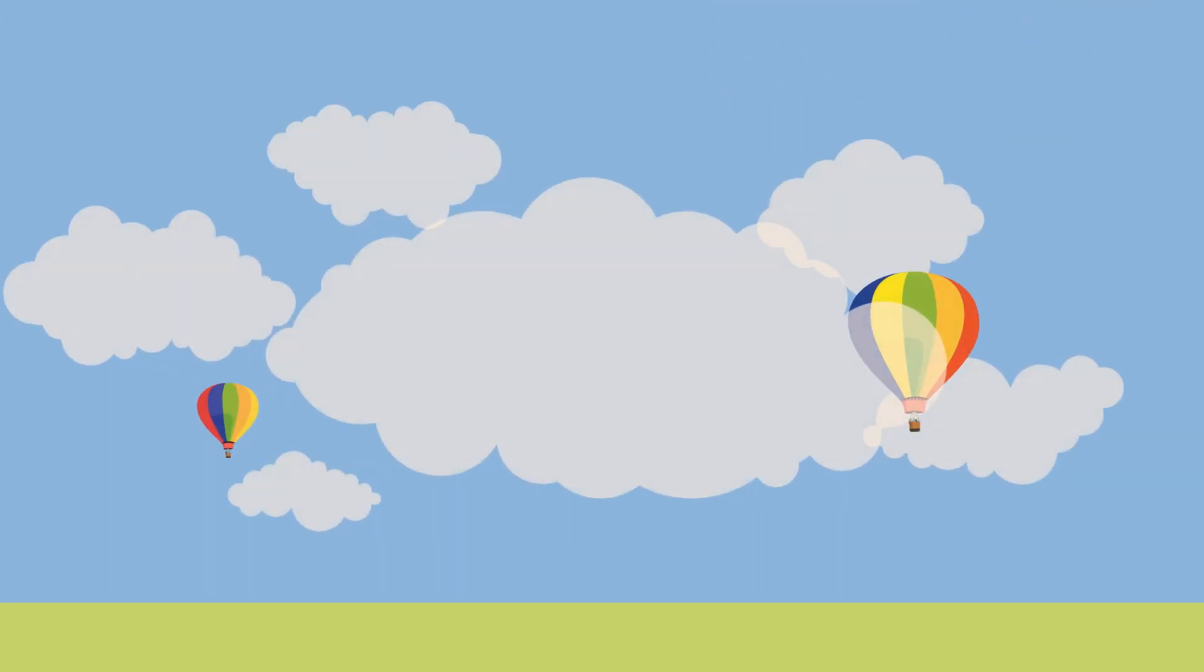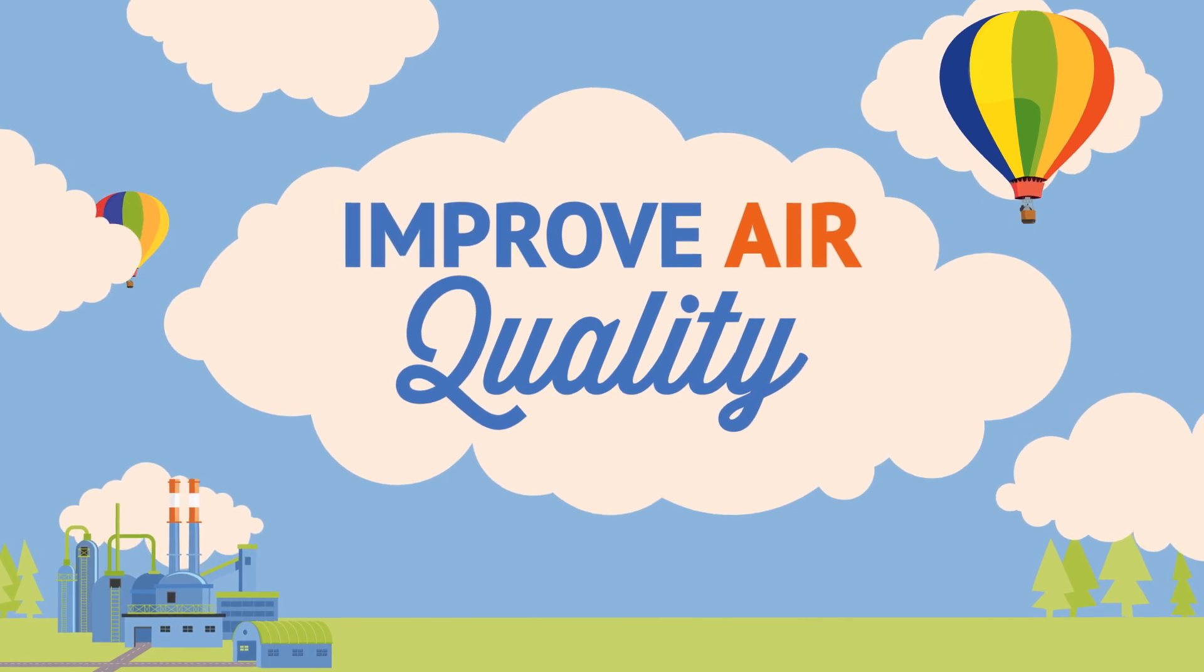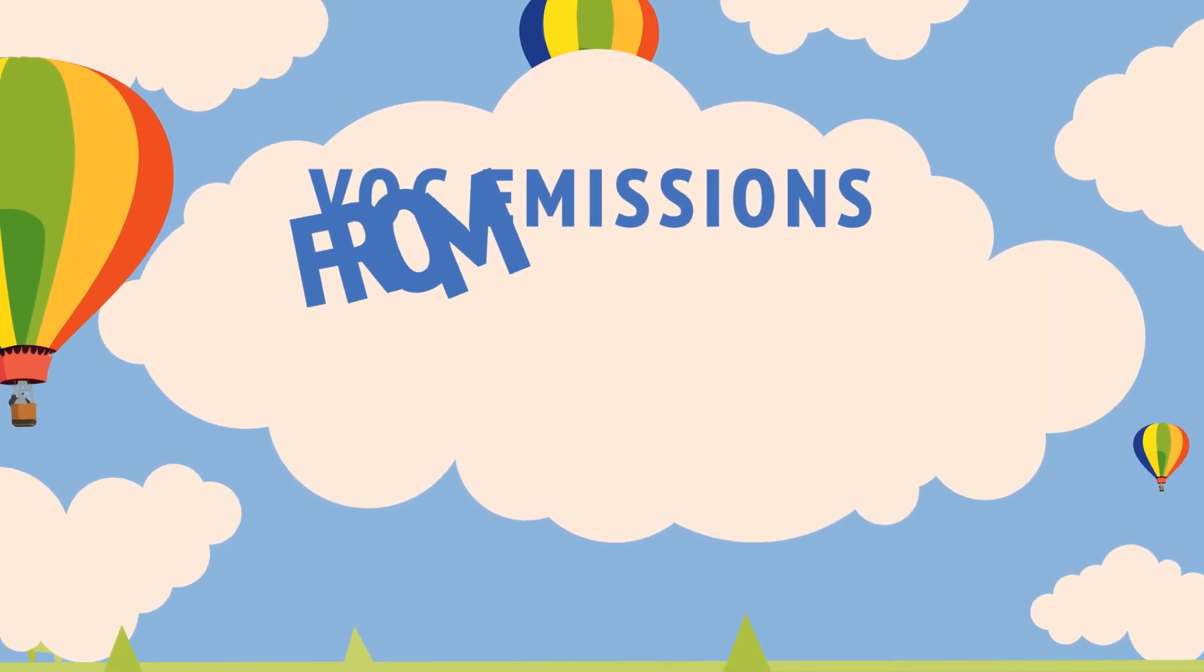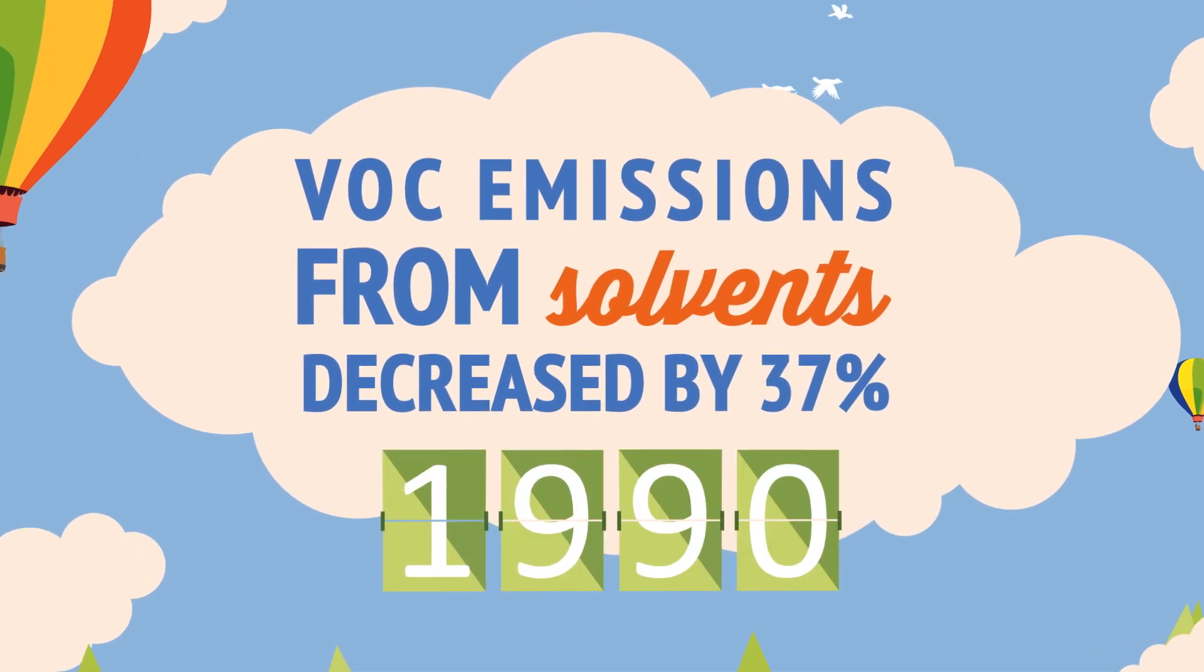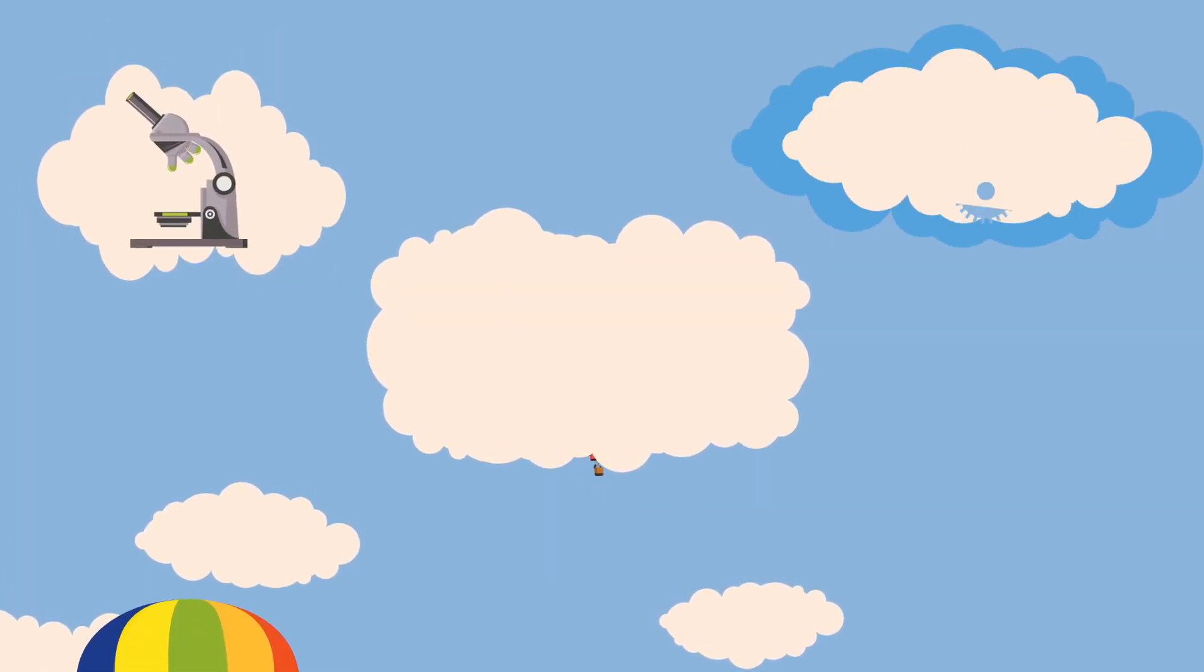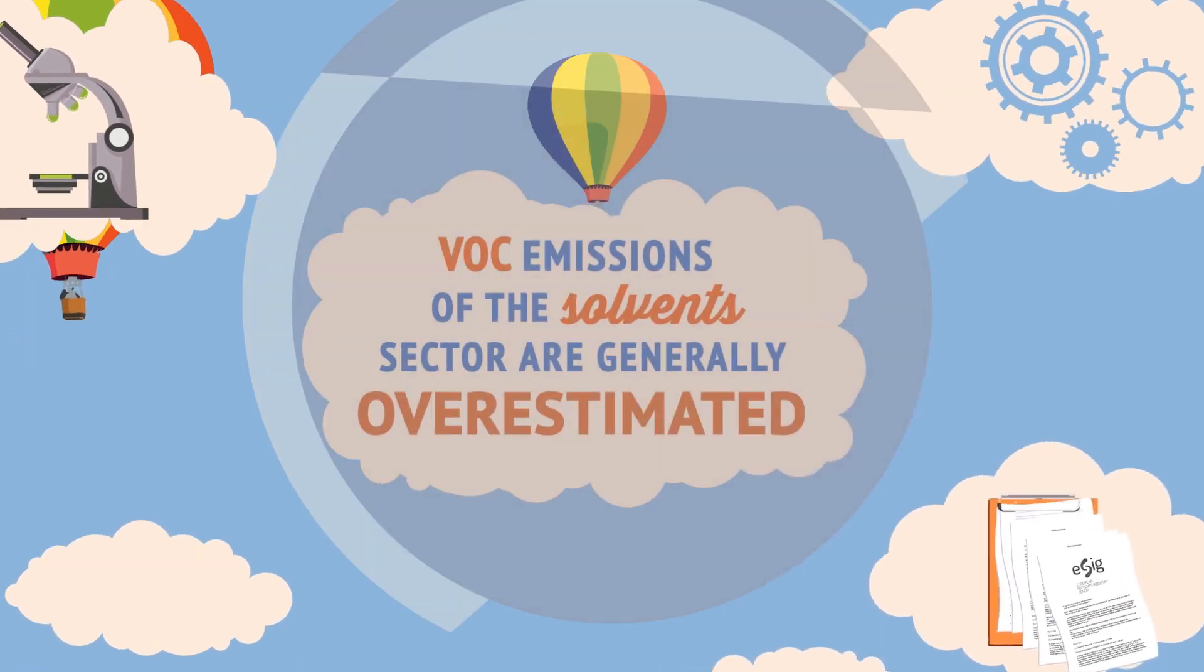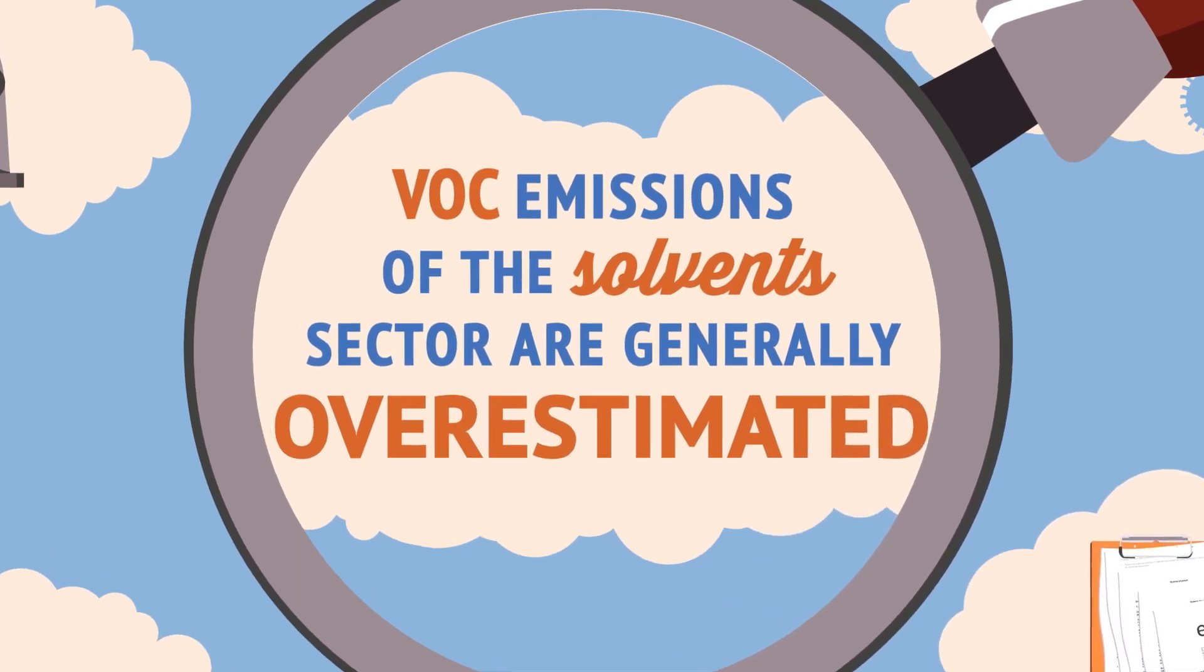We are committed to reducing ground level ozone to improve air quality. Thanks to considerable efforts by ESIG member companies in collaboration with their downstream users, volatile organic compound emissions from solvents decreased by 37% between 1990 and 2010. ESIG has carried out research which shows that the contribution of the solvents sector to VOC emissions is generally overestimated and that the European solvents industry has made greater improvement in reducing ozone than previously understood.